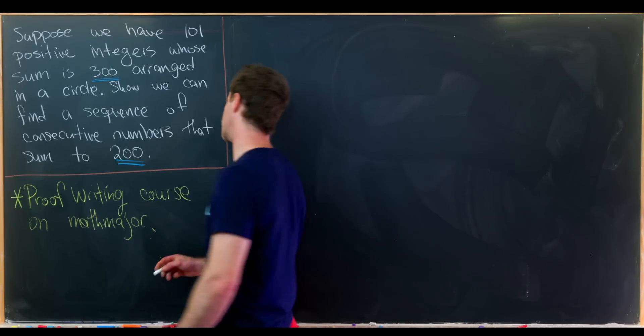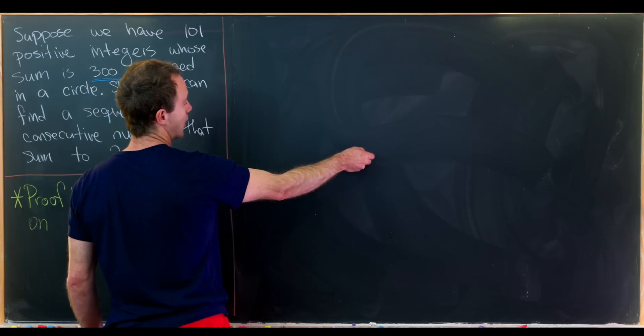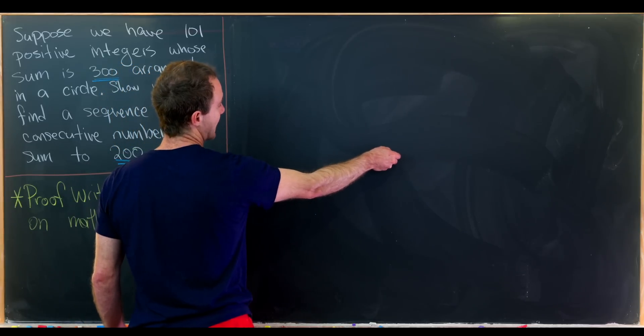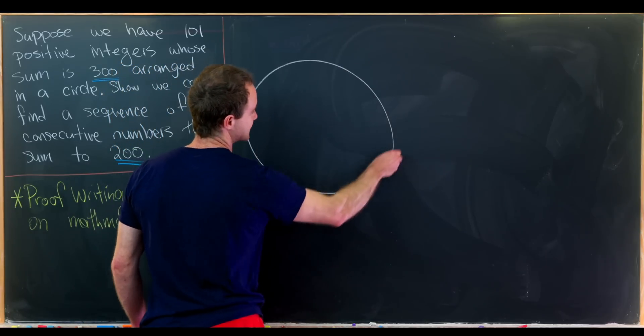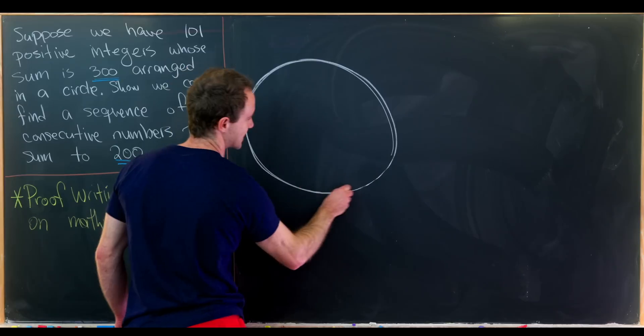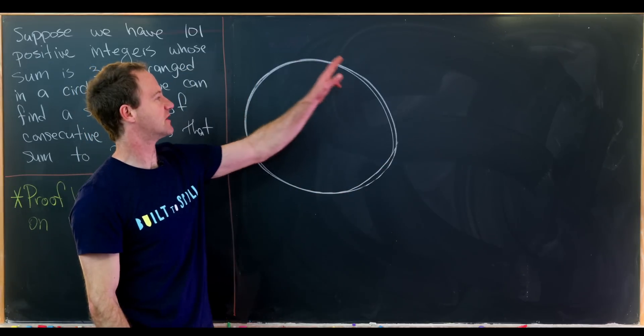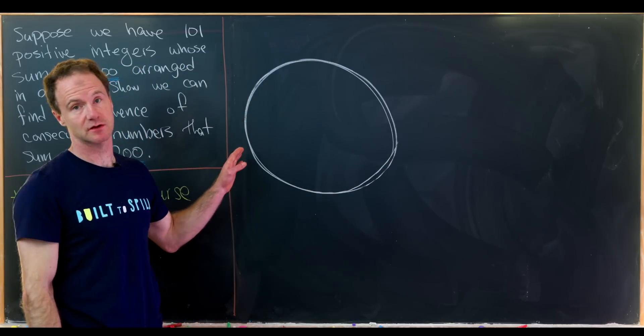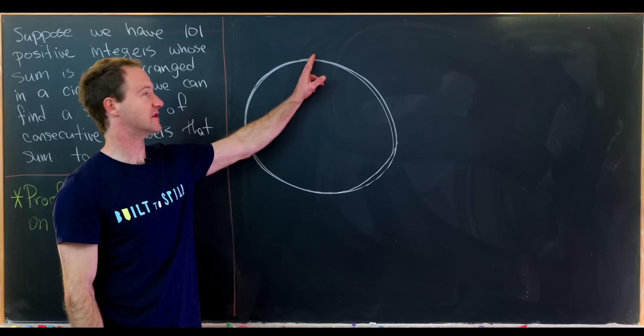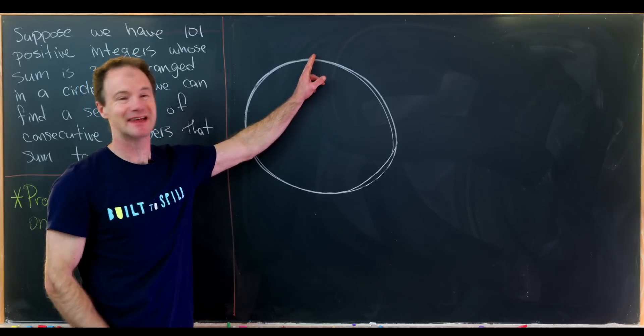So I'm going to start by introducing some notation. So let's take these 101 numbers and the first thing that we'll do is place them on a circle. So let's say this is our circle. And so just imagine the 101 numbers being around the circle. Now we're going to pick one of them.